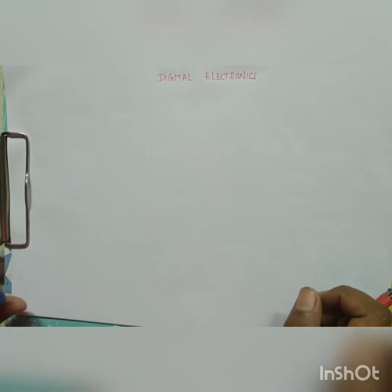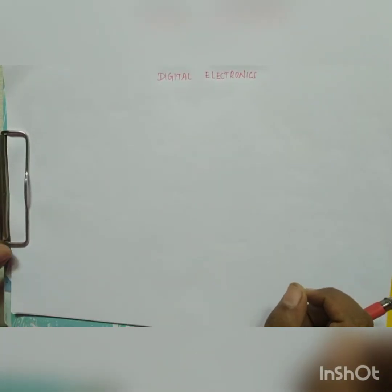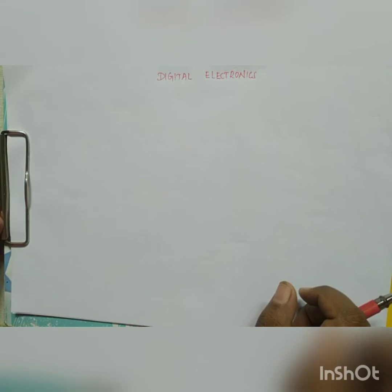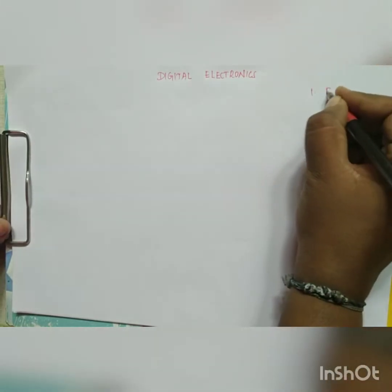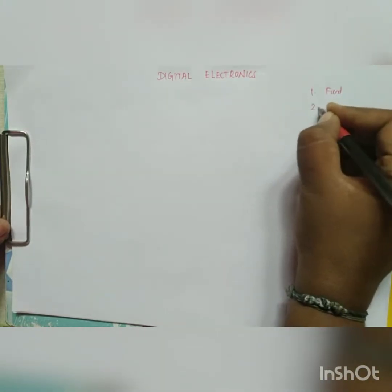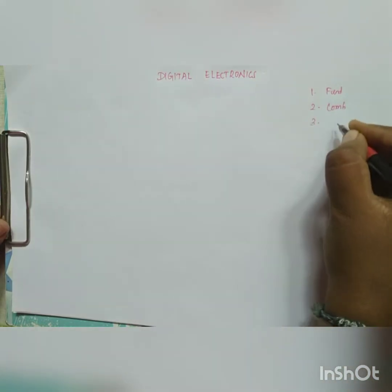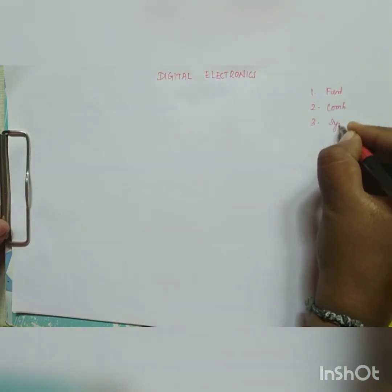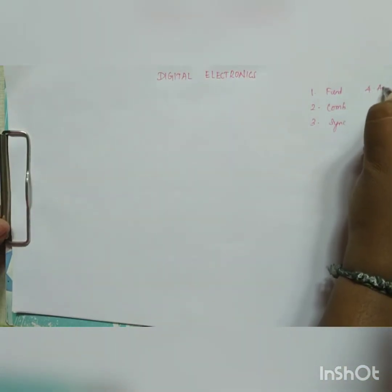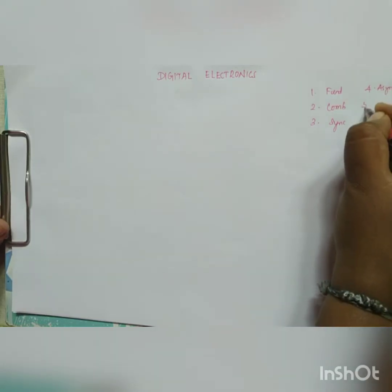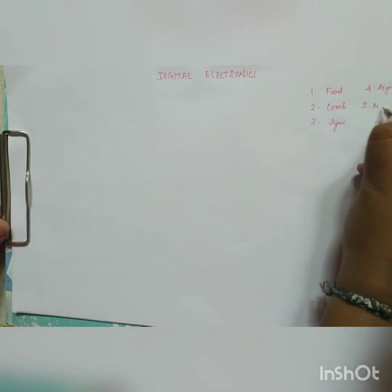Good morning Makkale. This is my first video and the subject is digital electronics. The first unit is fundamentals of digital electronics, second unit is combinational circuit, third unit is synchronous circuit, fourth unit is asynchronous circuit, and fifth unit is memory devices.